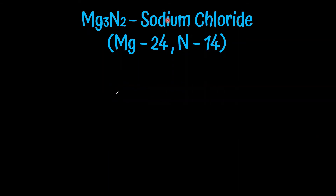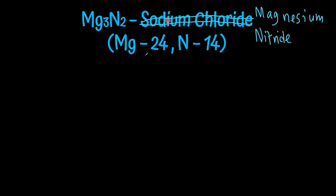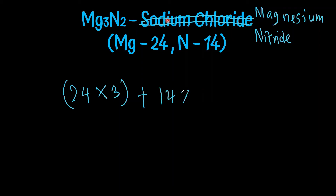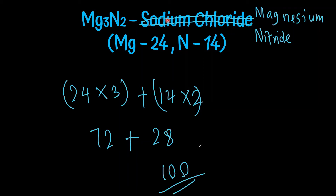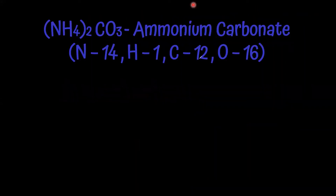Next, let's find the relative molecular mass of magnesium nitride, Mg3N2. Three magnesium atoms: 24×3 = 72. Two nitrogen atoms: 14×2 = 28. Total: 72 + 28 = 100. The relative molecular mass of magnesium nitride is 100, and its molar mass is 100 g mol⁻¹.